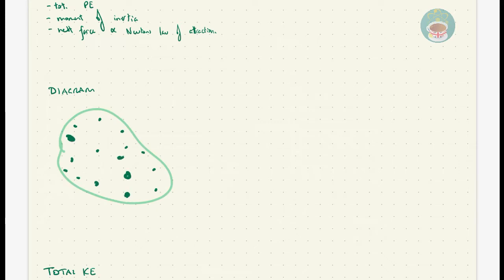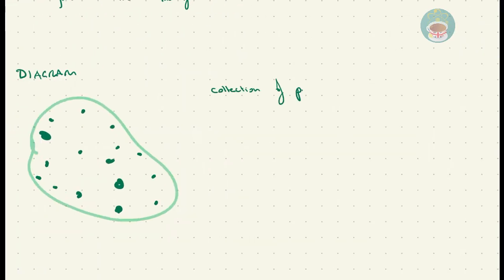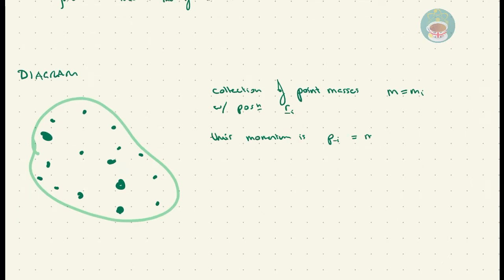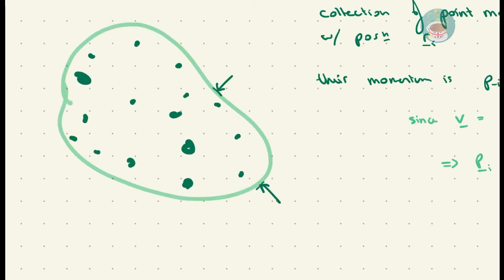Starting with the concept here, we have a collection of point masses Mi, with positions Ri and momentum Pi. These bodies constitute the total system, which has mass m and radius r.